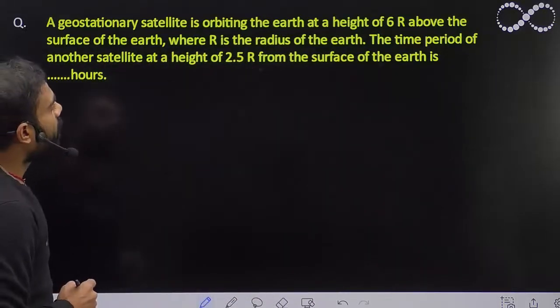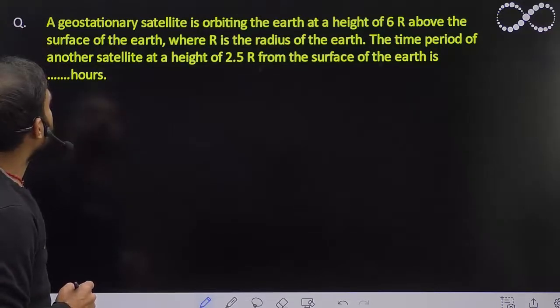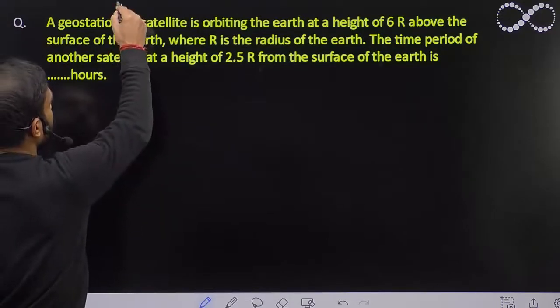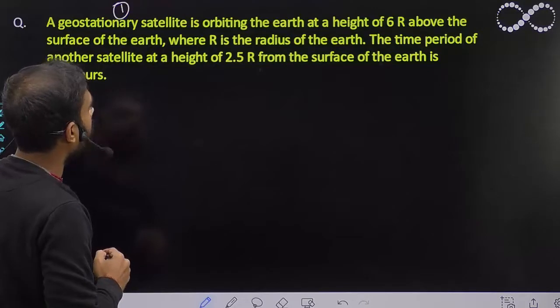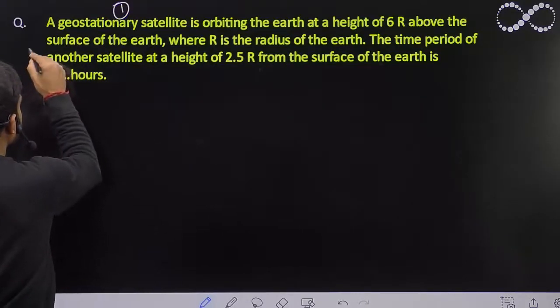A geostationary satellite is orbiting the earth at a height of 6R above the surface of Earth. Let us call this as 1, and we have to find the time period of another satellite. Let us call this one as 2.